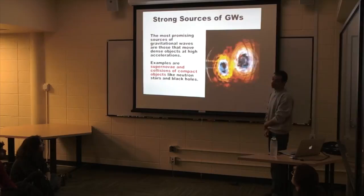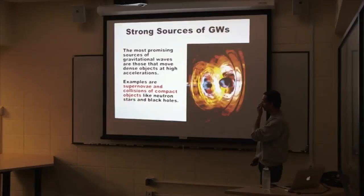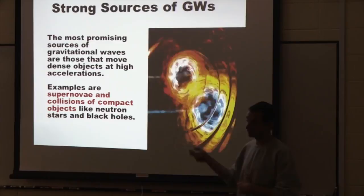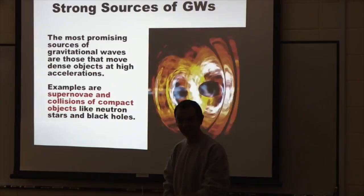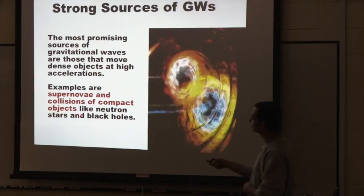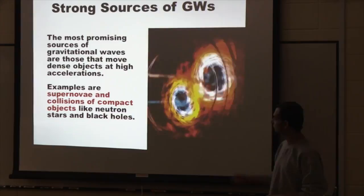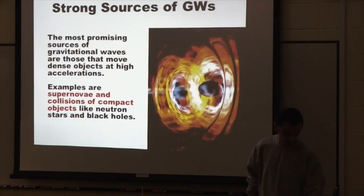The strongest sources of gravitational waves are dense, very massive objects with very high accelerations. Good examples are supernovae and collisions of compact objects like black holes. Here you have essentially two black holes giving off waves shown as ripples as they come close together.